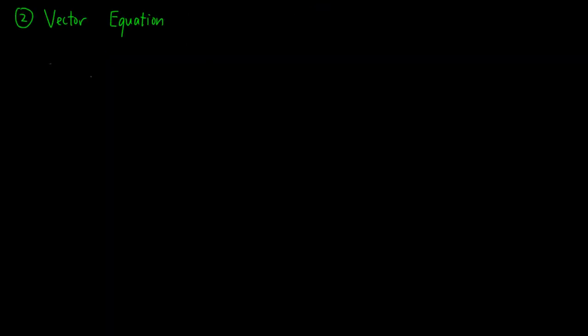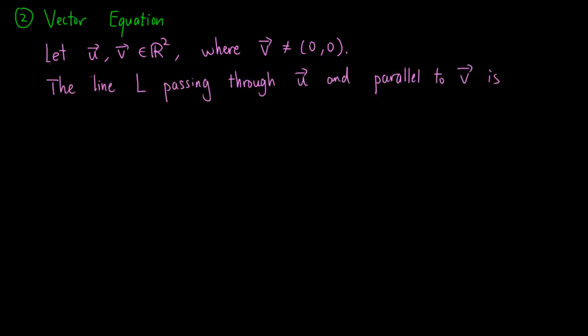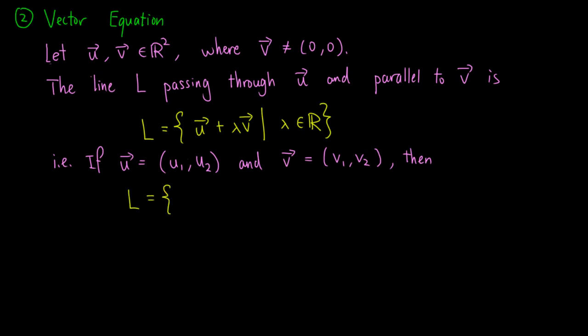The second method is the vector equation, which can be described as follows. Let u and v be vectors in R², where v is not the zero vector. The line L passing through u and parallel to v is the following: it is the set of u + λv, where λ is a real number. In other words, if we write u as (u₁,u₂) and v = (v₁,v₂), then the line L can be written as the set of points (u₁+λv₁, u₂+λv₂), where λ is a real number.